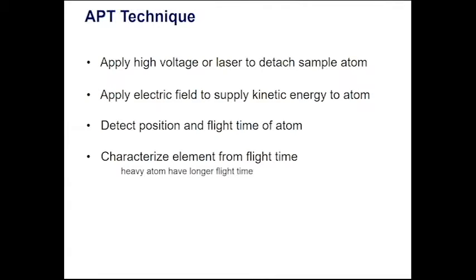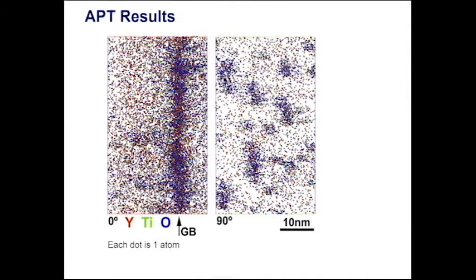APT results obtained by such process can be used to analyze the microstructure of your sample. A typical APT result is shown in this picture. Each colored dot is positions of yttrium, titanium, and oxygen atoms in a nanostructure ferritic steel sample.